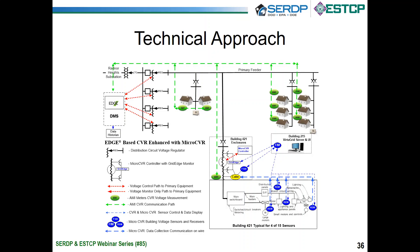In the lower right quadrant of the schematic, you'll see the micro-CVR approach where the low-voltage regulator is operating using monitored voltages and feedback located inside building 421. The voltage feedback was sent to a monitoring station inside building 215 on a fiber backhaul line installed by Dominion. From this building, the CVR and micro-CVR performance could be observed in real time by the Dominion Energy team.